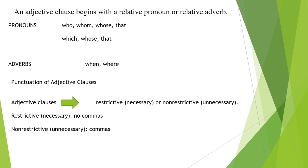If the non-restrictive clause were omitted, we would still know which person won the Nobel Prize. 'He won the prize for his research into the structure of T-cells, which might lead to a cure for AIDS.' We already know which research he won the prize for. The clause 'which might lead to a cure for AIDS' is not necessary to identify the research — it merely gives extra information.